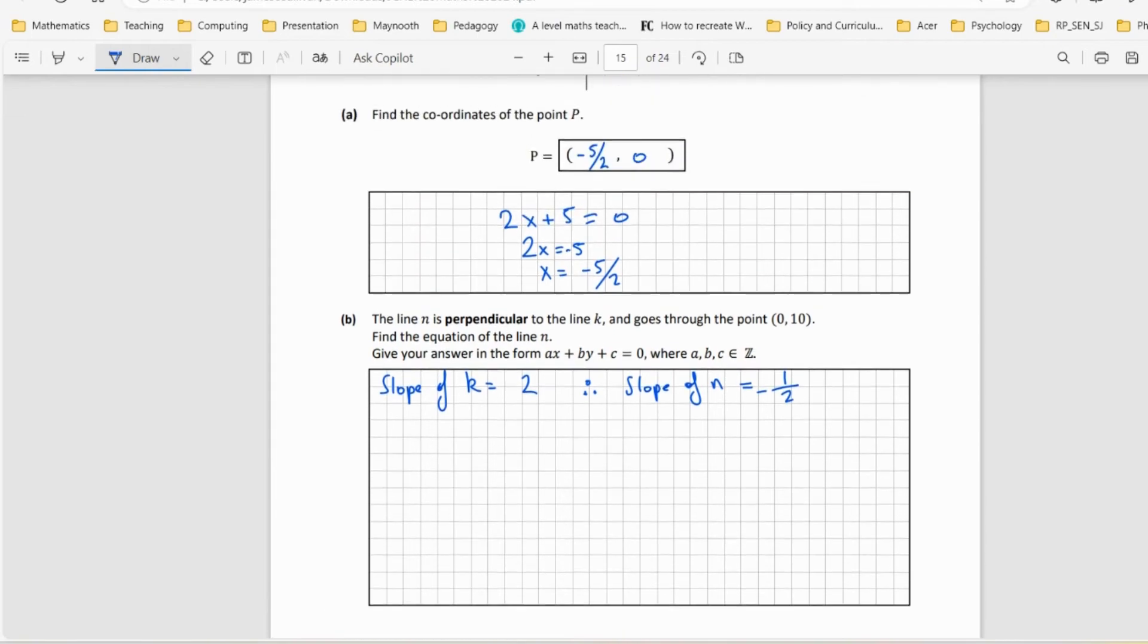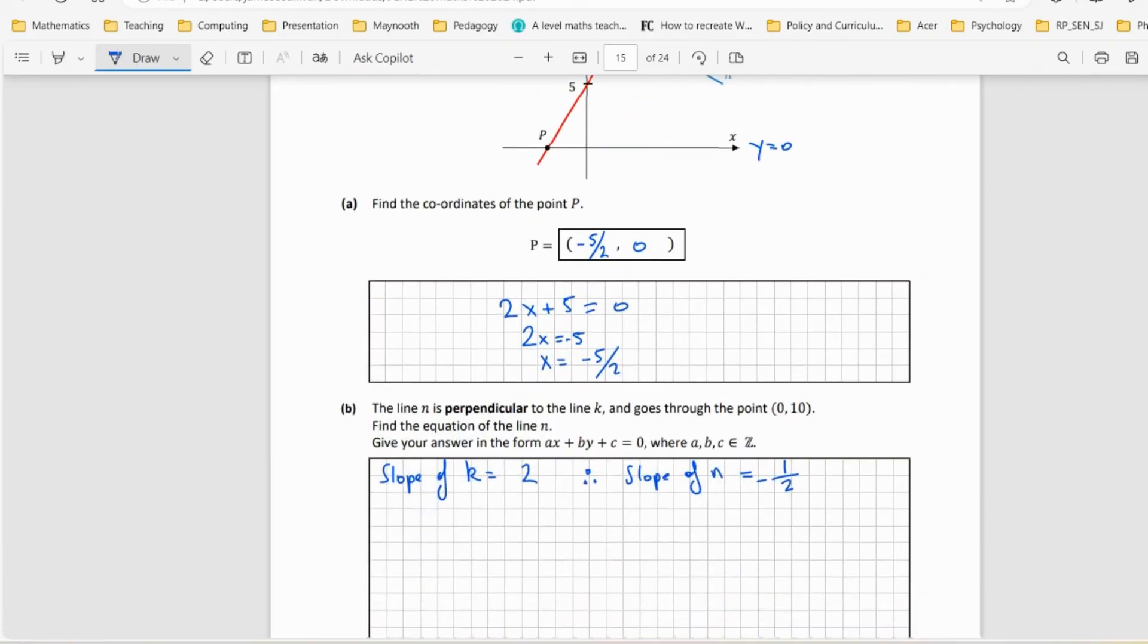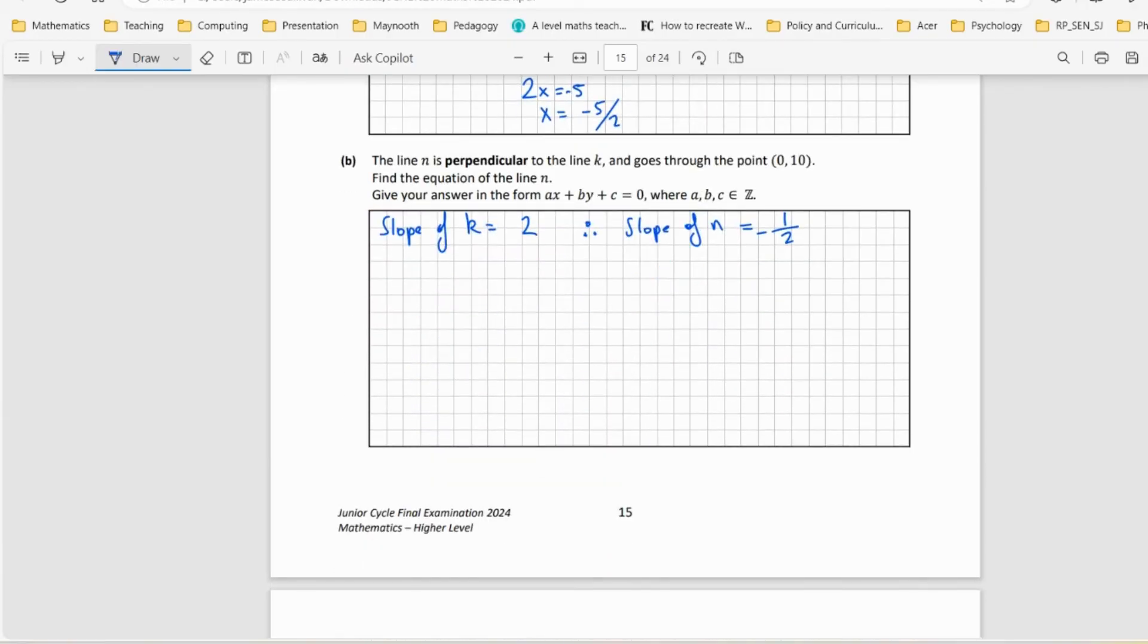We know that much, and we have a point for n at (0, 10). So we can use the point-slope formula to help us: y - y₁ = m(x - x₁) where the point is (0, 10).